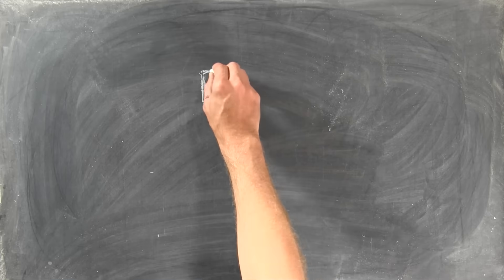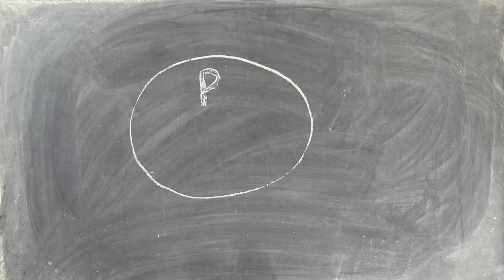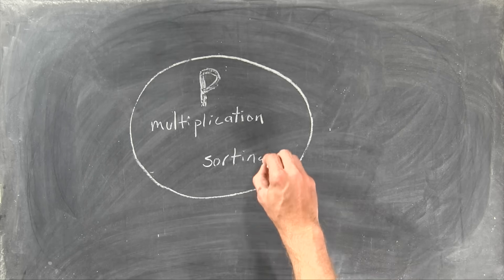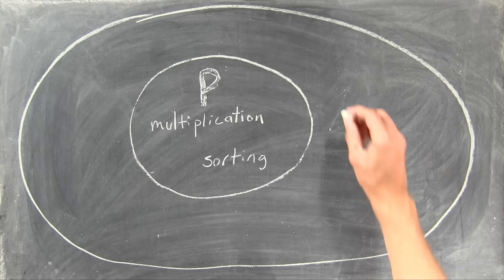This is where P and NP come in. Skipping a ton of details for a second, P is a class that basically includes all the problems that can be solved by a reasonably fast program, like multiplication or alphabetizing a list of names. And then, around and including P, we sort of discovered a class called NP.